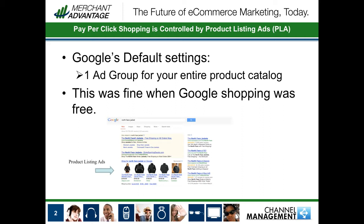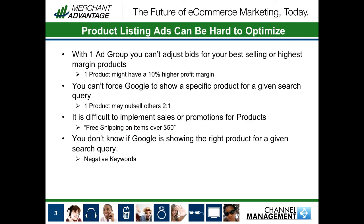Google made it easy for advertisers to get set up using this service, so they have a default setting that creates one ad group for your entire product catalog. This was fine when Google Shopping was free, but with the one ad group it can be hard to optimize.